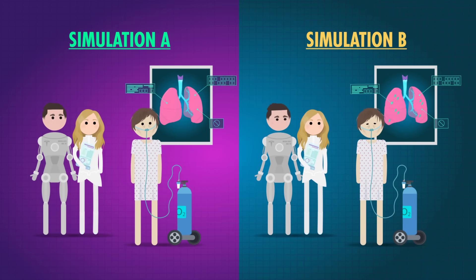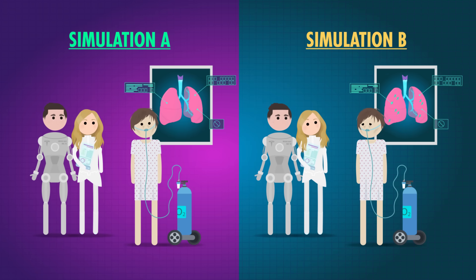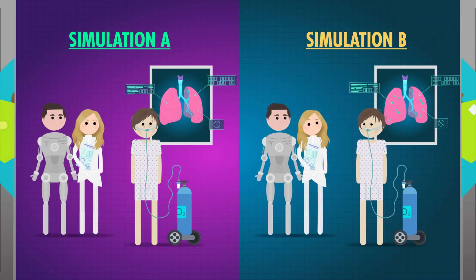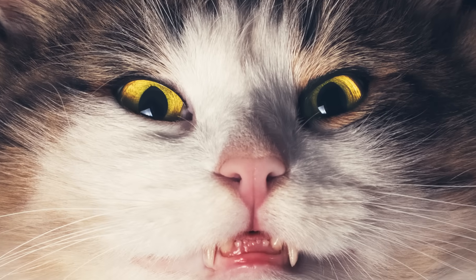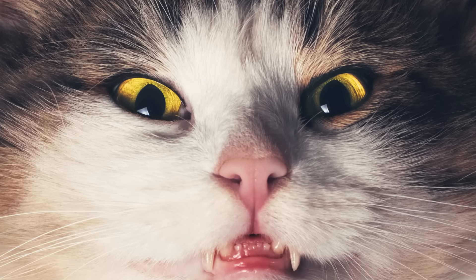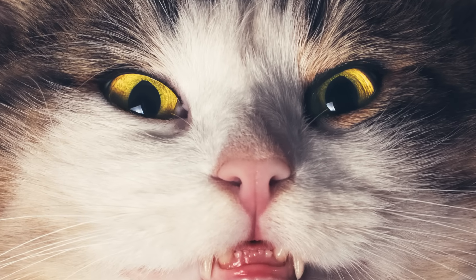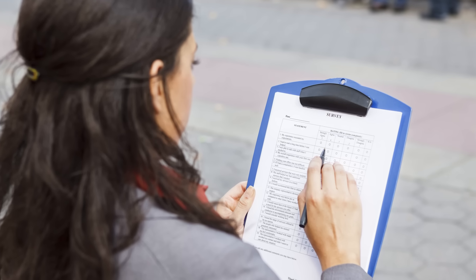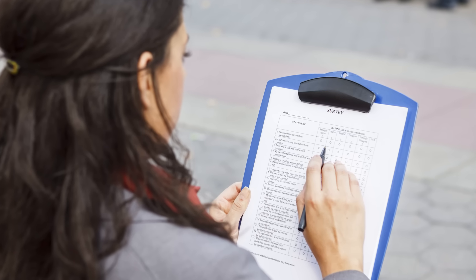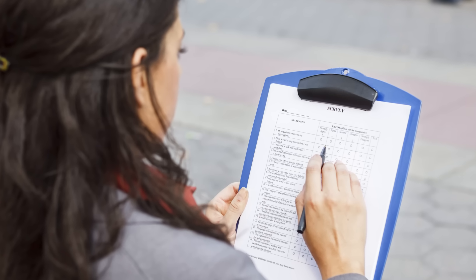Hi, I'm Adrienne Hill. Welcome back to Crash Course Statistics. In our last episode, we talked about how we use experiments to imitate having two parallel universes to test things. But sometimes you can't do certain experiments without becoming an all-powerful and evil dictator. And since it's statistically unlikely that any of you are evil dictators, today we'll explore those methods.